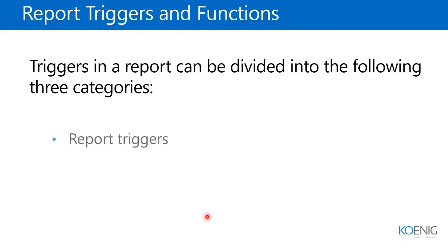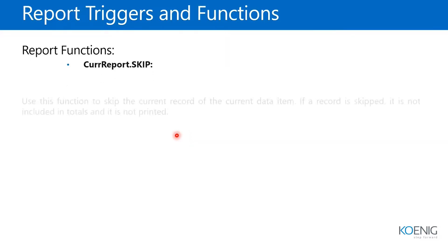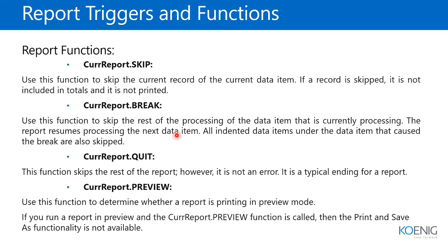Reports have their own triggers at the bottom. Data items also have their triggers, and the request page also has its triggers. Objects and sub-objects that have a body will have their triggers and properties. There are also various functions we use to satisfy requirements at the time of dataset creation. These report functions are: CurrentReport.Skip, CurrentReport.Break, CurrentReport.Quit, and CurrentReport.Preview.